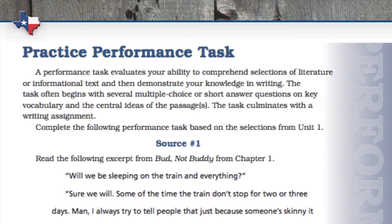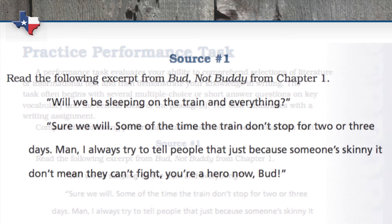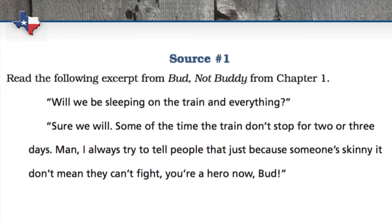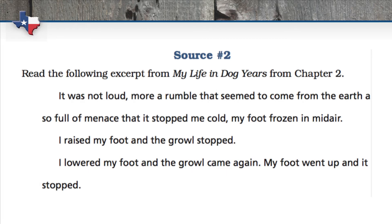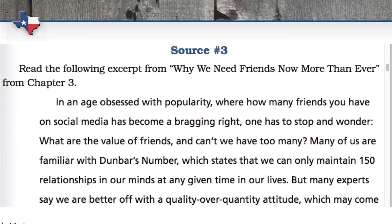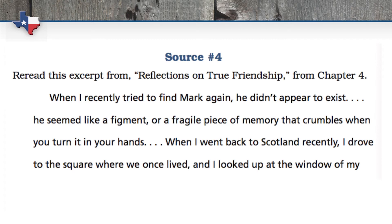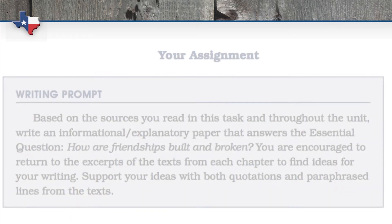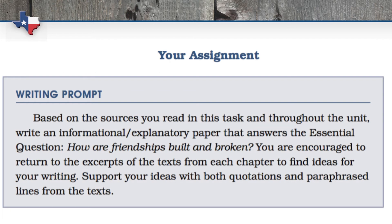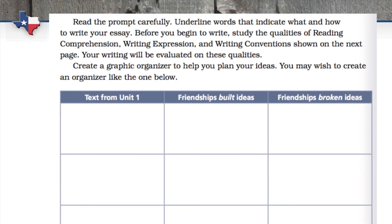The final piece in a Connections unit, and perhaps my favorite, is the practice performance task. Students re-read small portions of the passages they've encountered in the unit's five chapters in order to revisit the ideas as they relate to the essential question. Then the students are prompted to write a short essay synthesizing the different perspectives in the passages and using their critical thinking skills to actually answer the essential question for themselves.